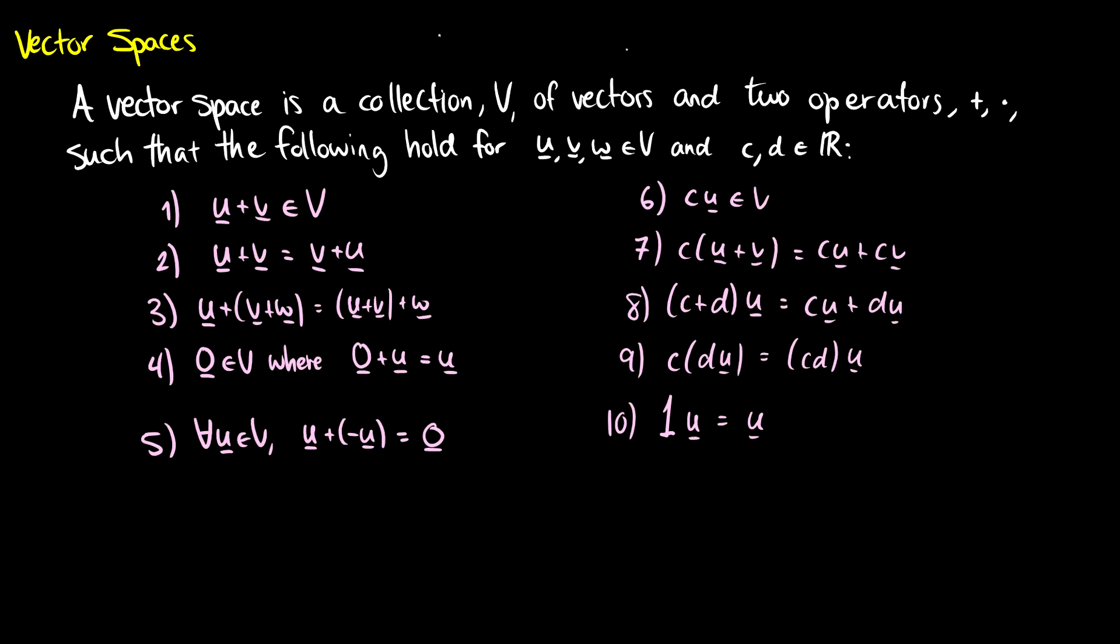Well a vector space is a collection of vectors and two operators, the plus and multiplication, or the dot, such that the following hold for all vectors and all real numbers. There are ten axioms that have to be satisfied here.